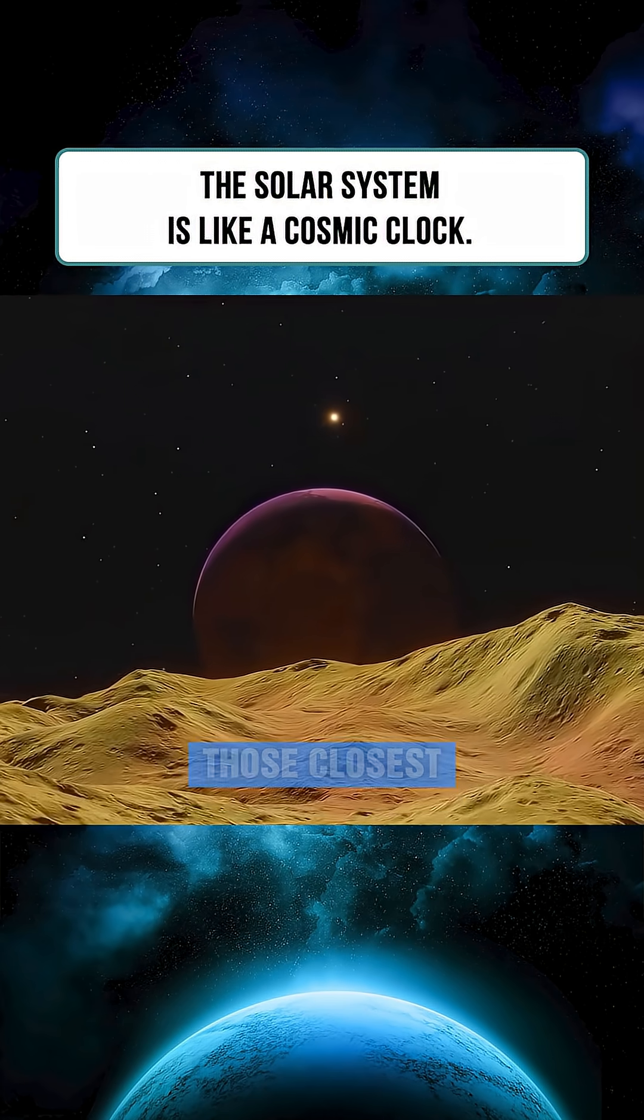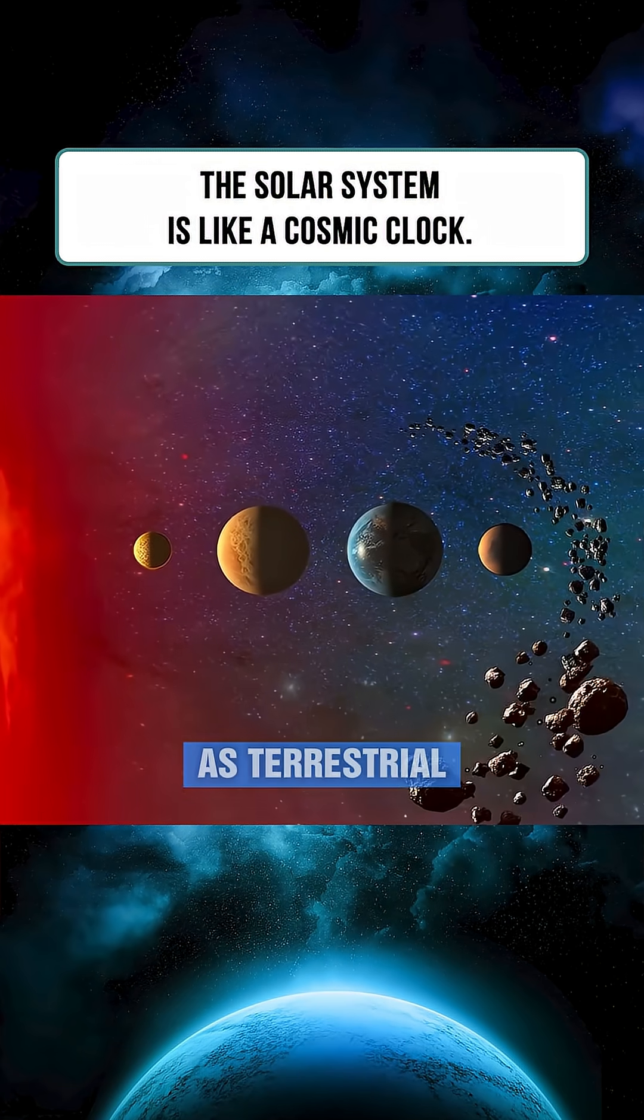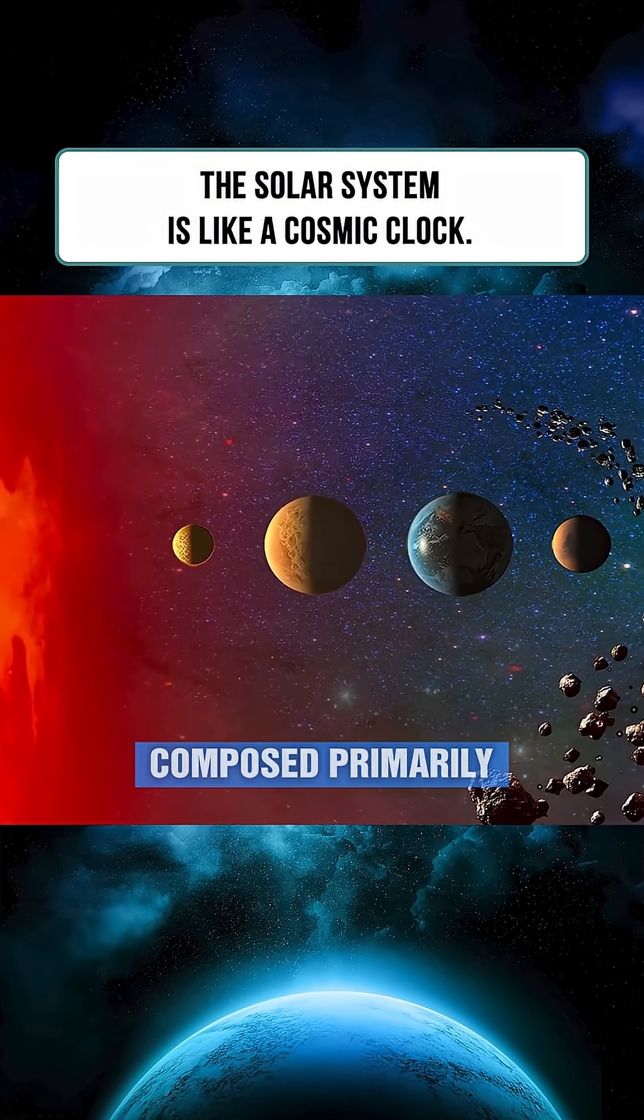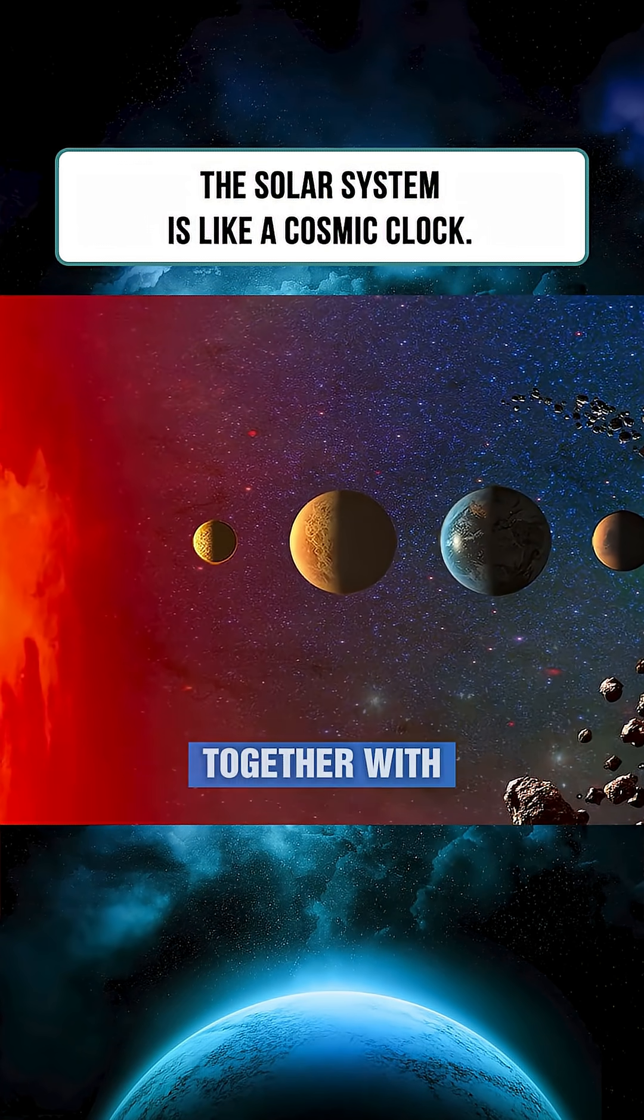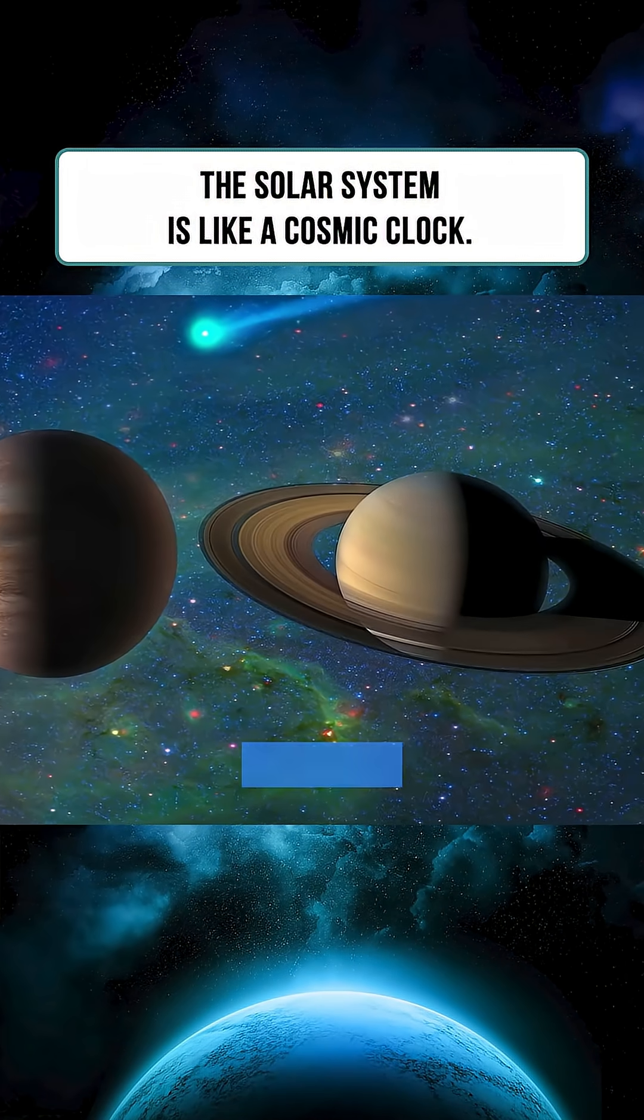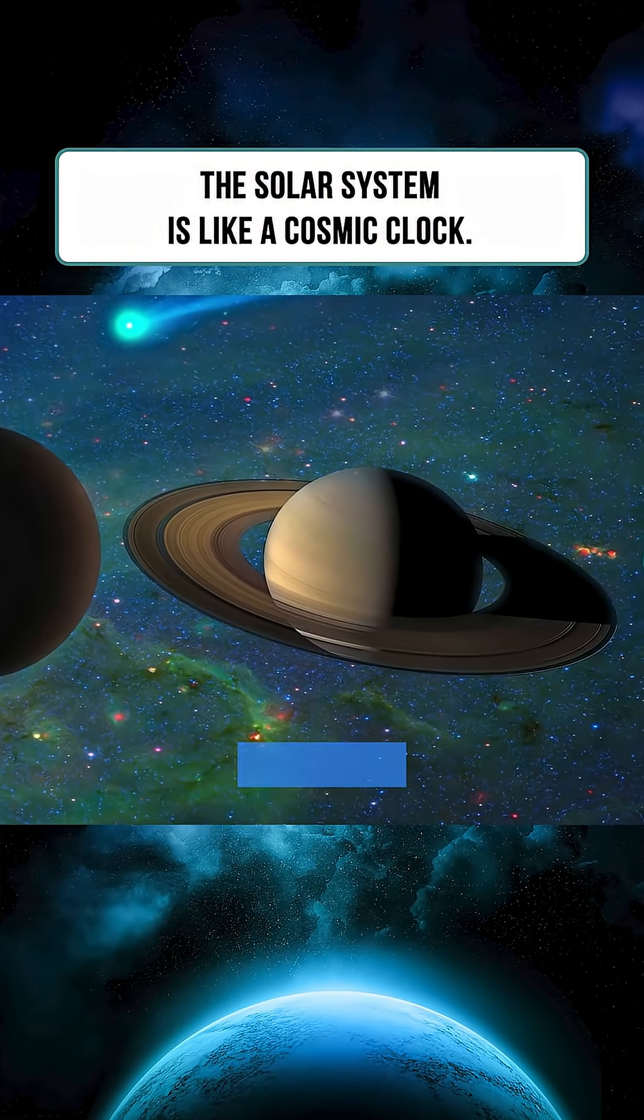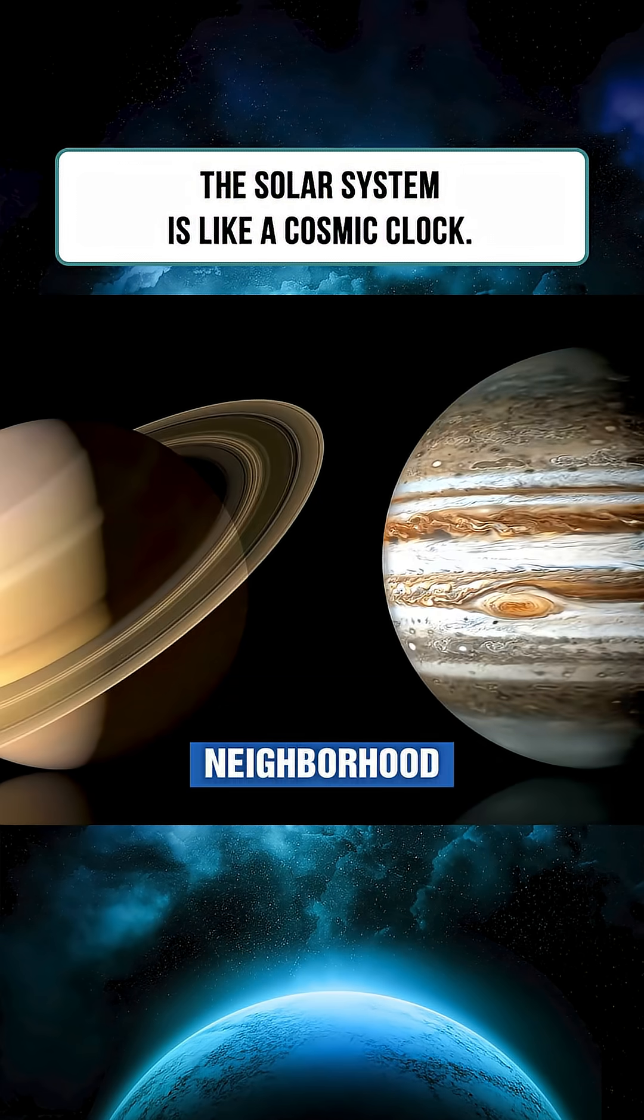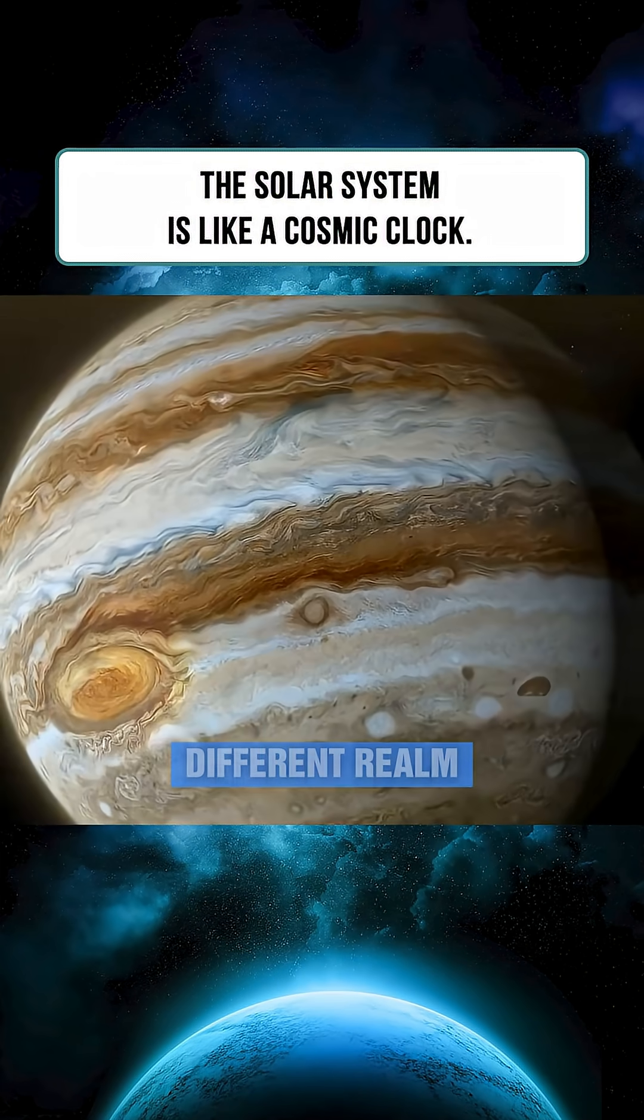The four inner planets, those closest to the sun, are known as terrestrial planets, composed primarily of rock and metal. Together with the sun and the asteroid belt located between Mars and Jupiter, these make up what we call the inner solar system, the very heart of our celestial neighborhood.